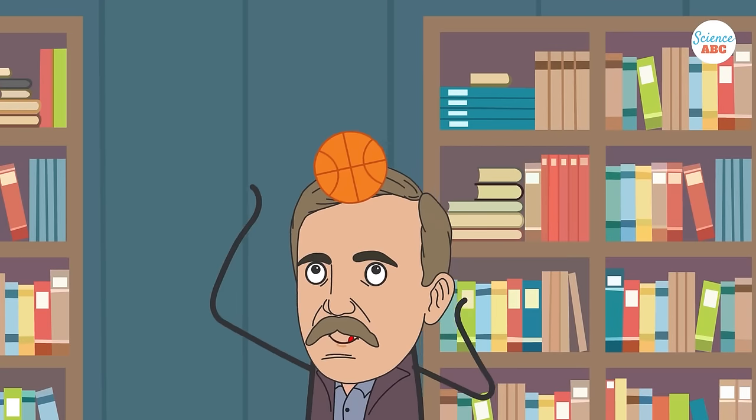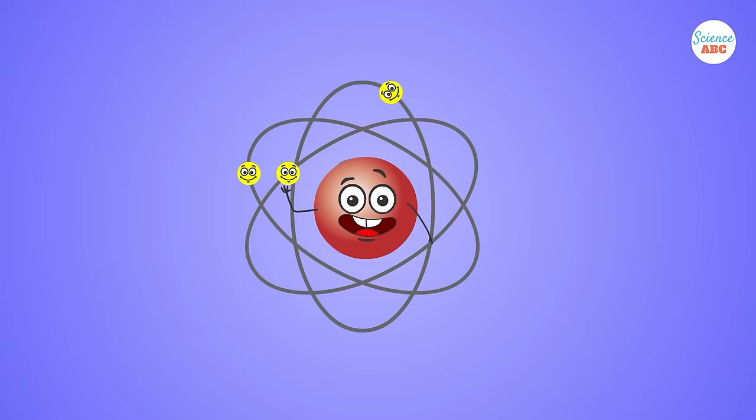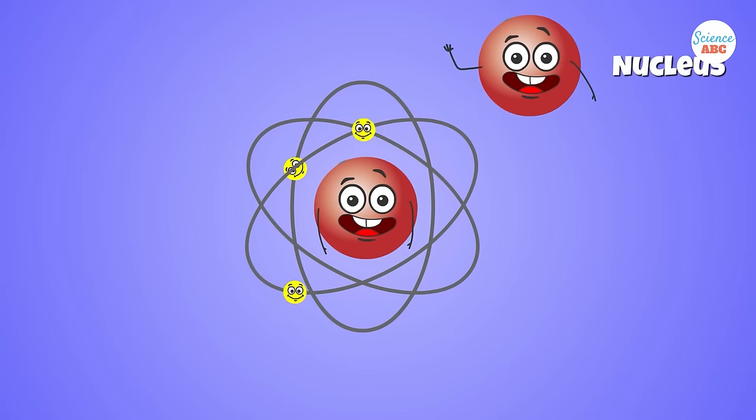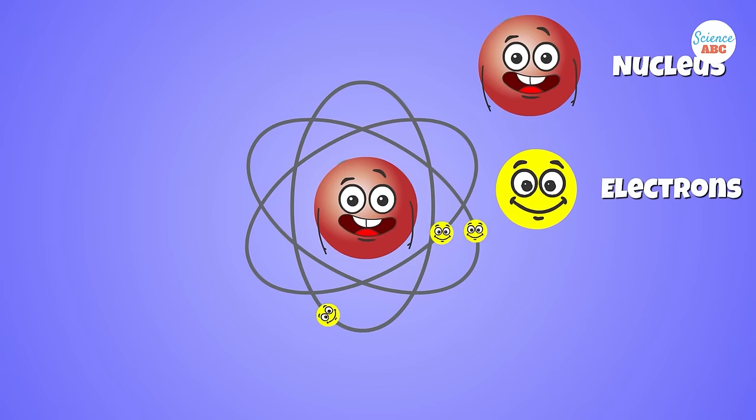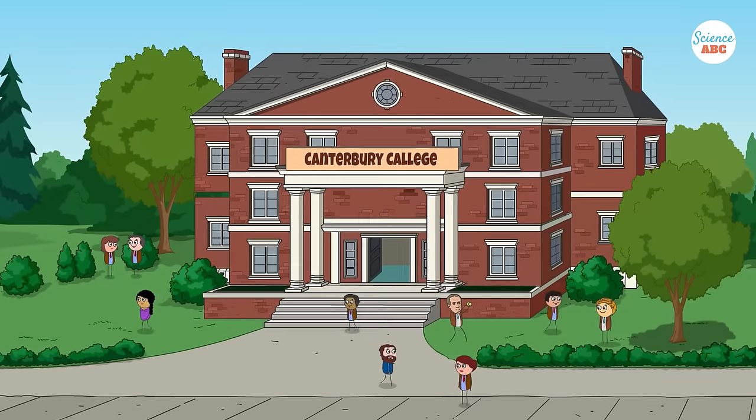Backed by his observations, he came up with a new atomic model that disproved the previous one. He proposed an atomic structure where most of the atom's mass was concentrated in a positively charged center, which he later named the nucleus, around which the electrons orbited like planets around the sun.